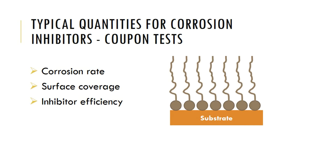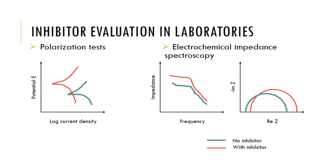In laboratories during the development of corrosion inhibitors, along with these coupon tests, a few electrochemical tests are also performed. These tests include polarization tests such as the Tafel plots, as well as electrochemical impedance spectroscopy, as shown on the right side of the slide. In the polarization tests, it can be seen that the blue plot is for the solution without inhibitor.